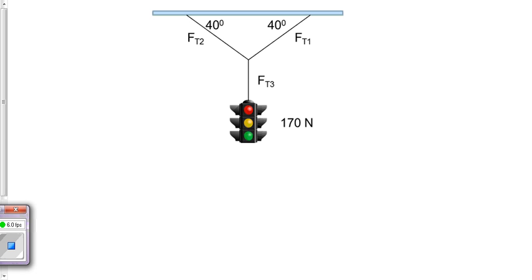The traffic light is held up by three cables and it's our job to find the value of the force tension in all cables. Force tension 3 is holding the entire 170, so that's going to be 170 newtons. So we have that one done really quickly.